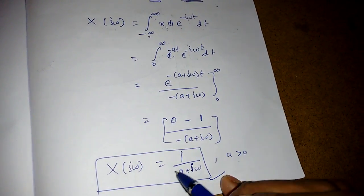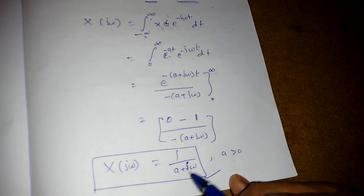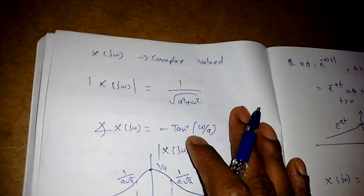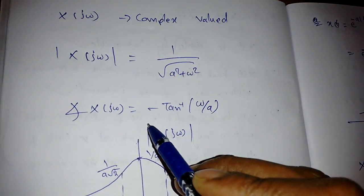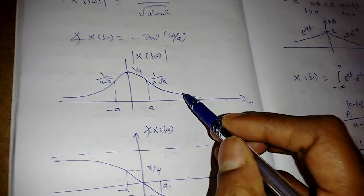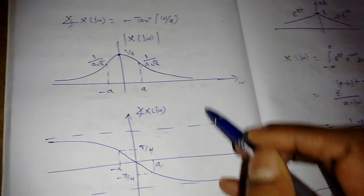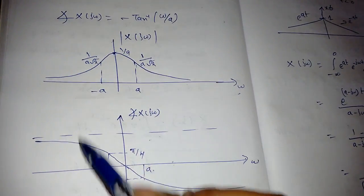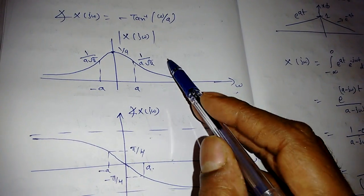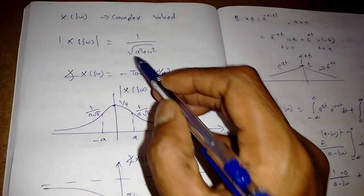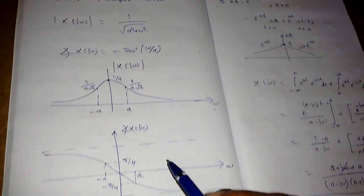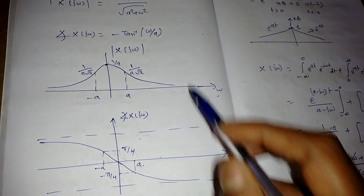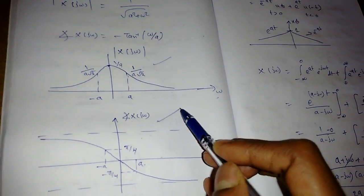This Fourier transform 1/(a + jω) is complex in nature. So we can find the magnitude and phase response and draw them as functions of ω. Sometimes a magnitude and phase response is given and we need to find X(jω), so it's important to be able to draw both the magnitude response and the phase response.